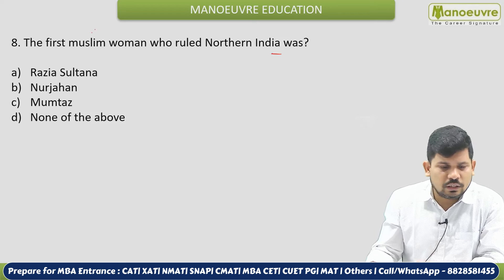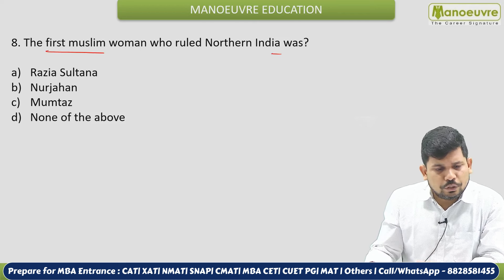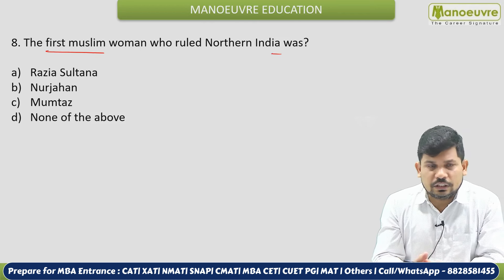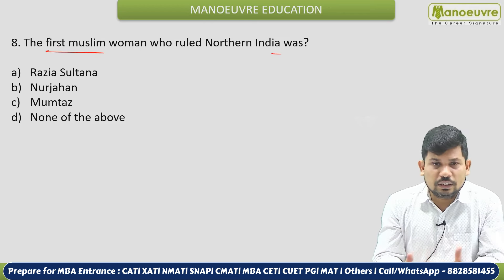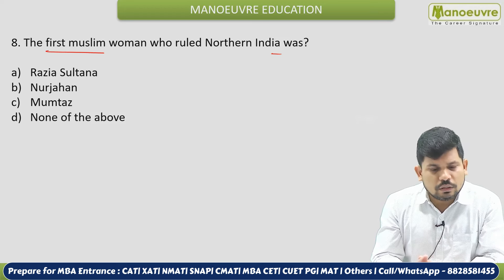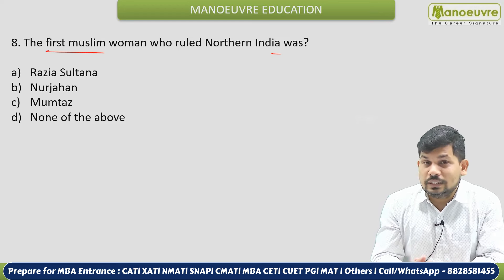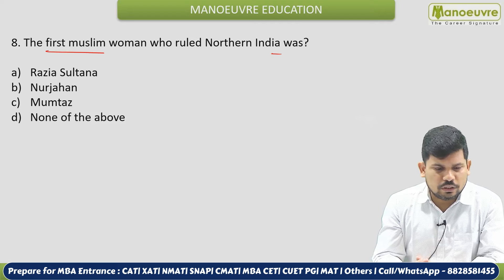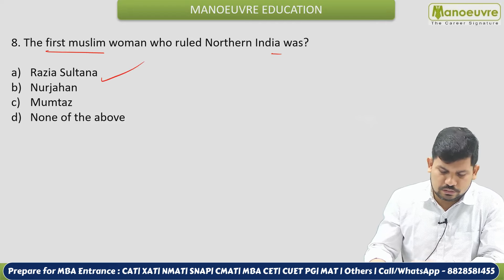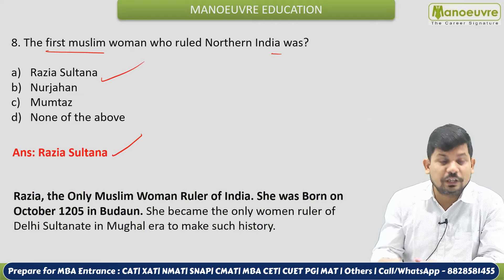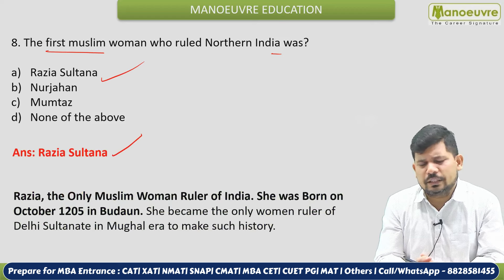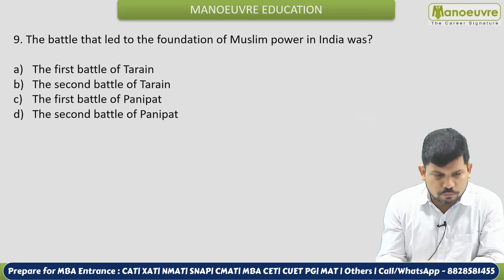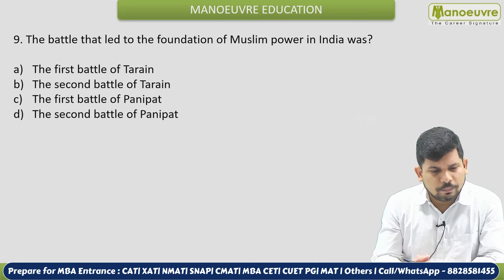Next: The first Muslim woman who ruled northern India — considering the entire Muslim period (Slave Dynasty and Delhi Sultanate and Mughal Empire), who is the only woman ruler? Options: Razia Sultan, Nurjahan, Mumtaz, or none of these. The correct answer is Razia Sultan — a very important, expected, and repeated question from a history point of view.